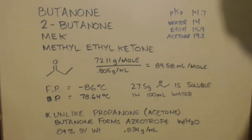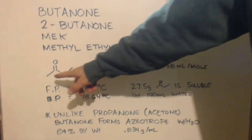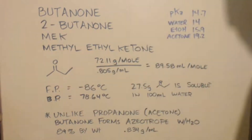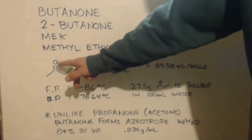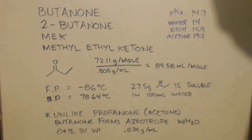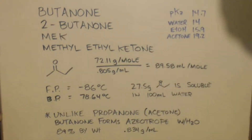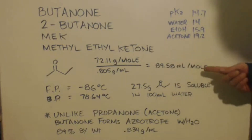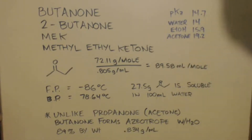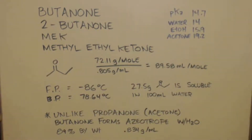It is a ketone — here's a picture of it. You got a methyl group on one side, a methyl group on the other side, split up by a carbonyl. There's a molar mass, density. If you divide that, you'll get the molar volume, freezing point, boiling point.